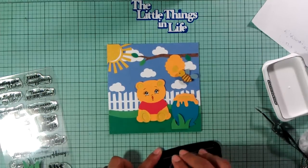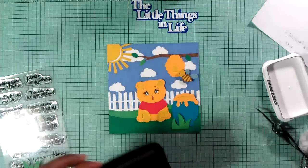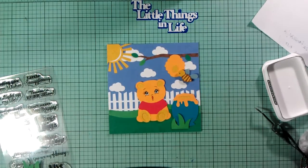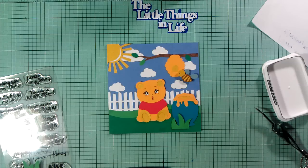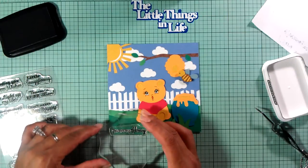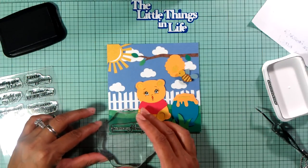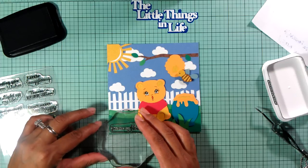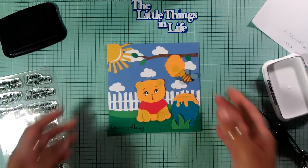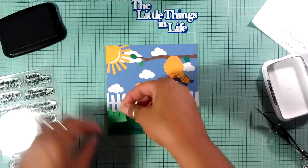I'm going to use the Memento Tuxedo Black ink and the stamp I'm going to use is You Are My Honey. I thought that was really cute. I kind of whispered at the beginning of the video because my husband was in the kitchen. This is his Father's Day card from me to him.